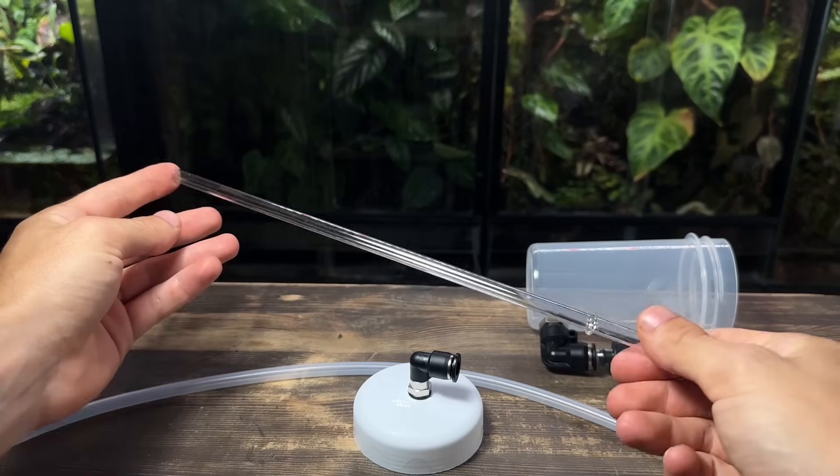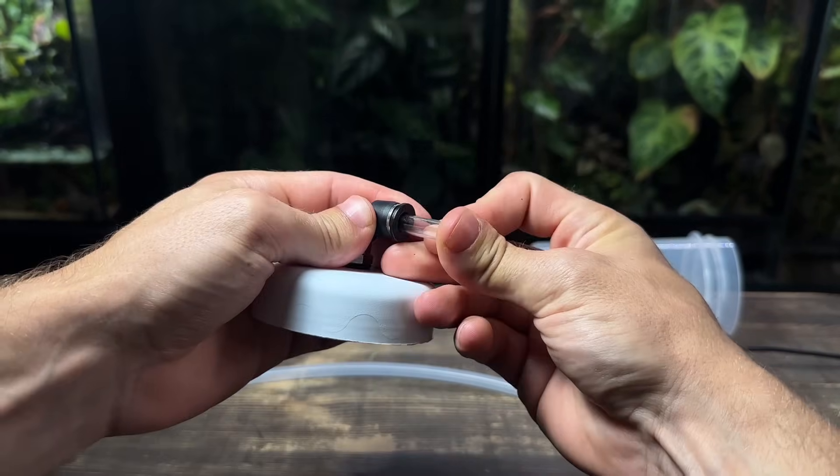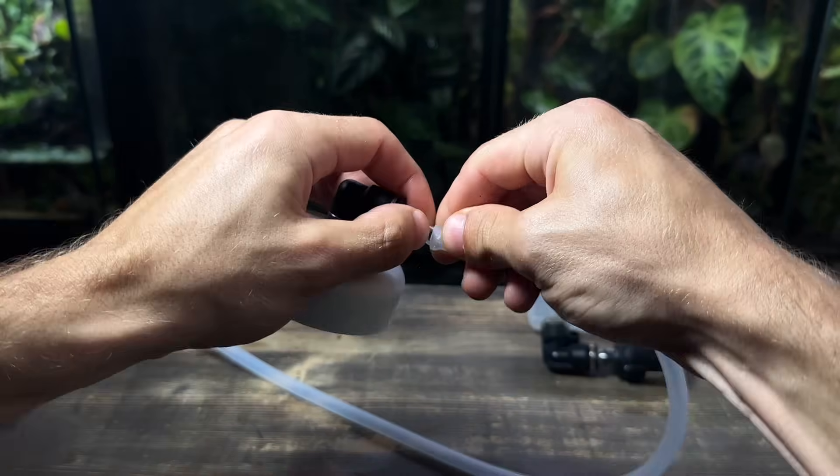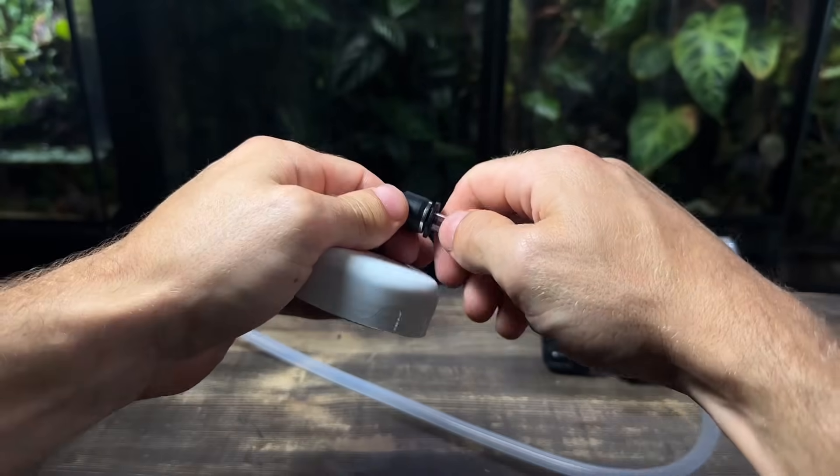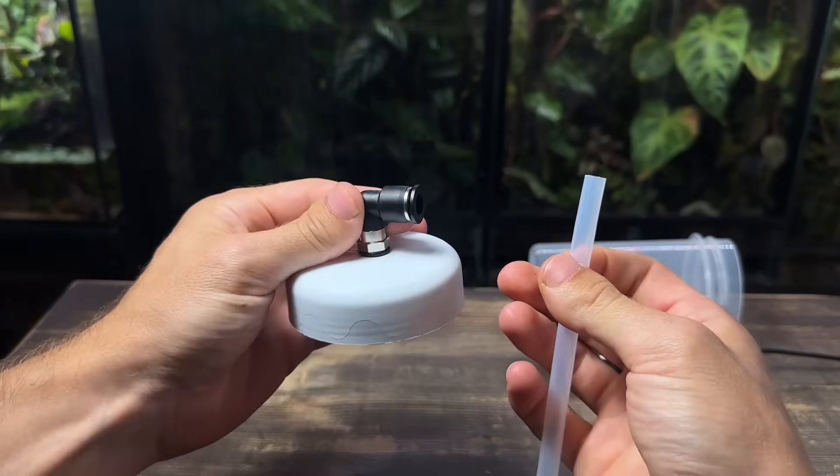As for the intake on the top of the filter I'm going to push in a small section of one of the plastic straws. I can then push on the silicone tubing and it holds on really well. The reason I'm not putting the silicone tubing straight into the push fitting is because it's not rigid enough and it can be pulled out too easily.